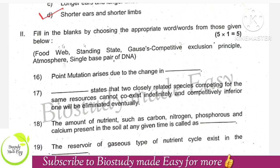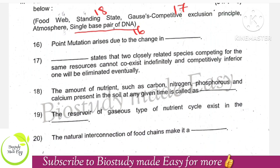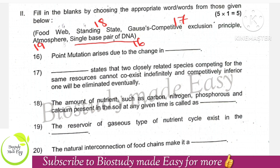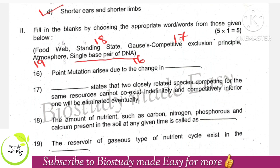Fill in the blanks: point mutation arises due to the change in a single base pair of DNA. Next, the principle that states two closely related species competing for the same resources cannot coexist indefinitely, and the competitively inferior one will be eliminated eventually — the right option is number 17, Gauss's competitive exclusion principle. The amount of nutrients such as carbon, nitrogen, phosphorus, and calcium present in the soil at any given time is called standing state. The reservoir of a gaseous type of nutrient cycle exists in the atmosphere.